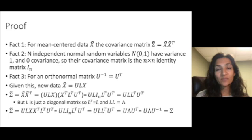Fact 3 is that for an orthonormal matrix, its inverse is actually equal to its transpose. Given this, if we apply the matrix U times L to our data, we get the new matrix X tilde. To compute the covariance matrix, we have X tilde times X tilde transpose, which is the same as U times L times X, multiplied by their transpose, which switches their order.